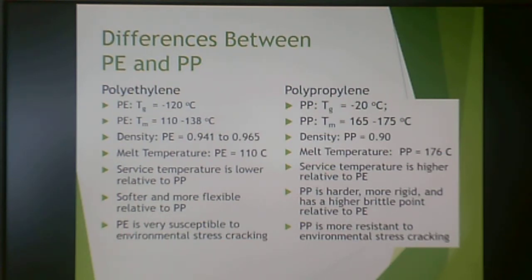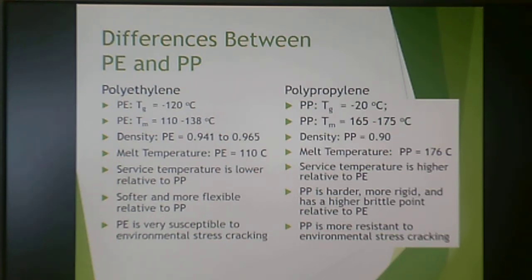Density of polyethylene ranges very widely, whereas polypropylene is a little less dense, tending to be similar in density to low-density polyethylene. Melt temperature for polyethylene can be as low as 110°C; polypropylene is usually about 176°C.